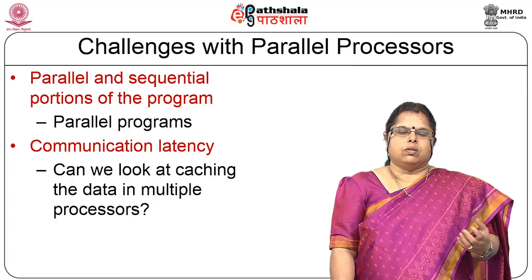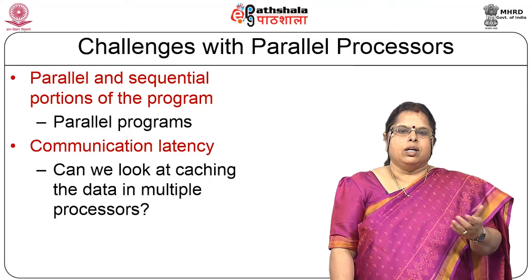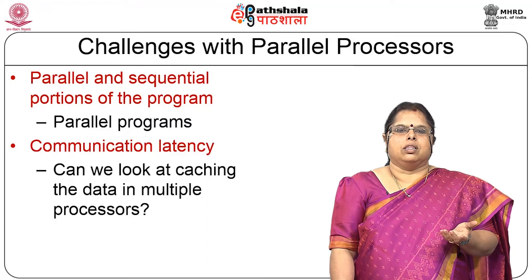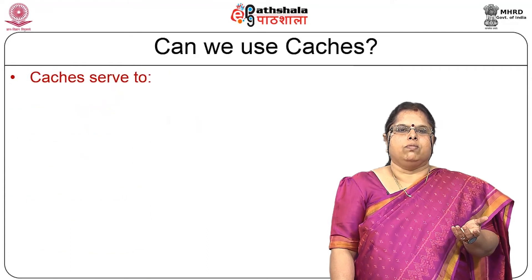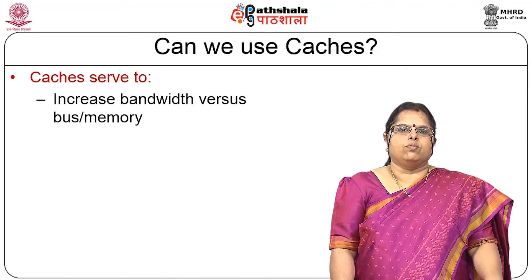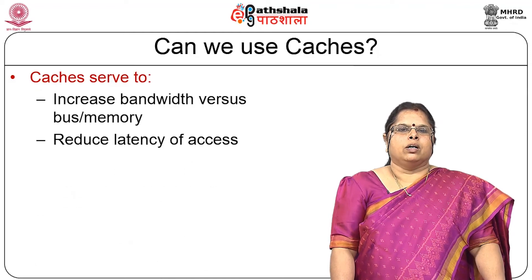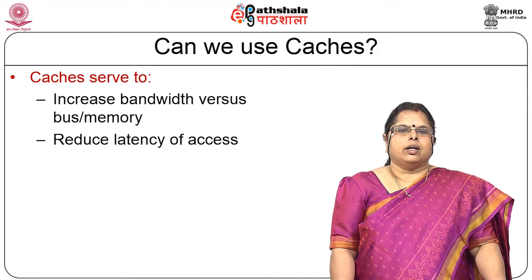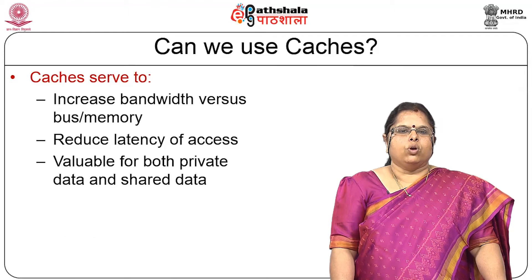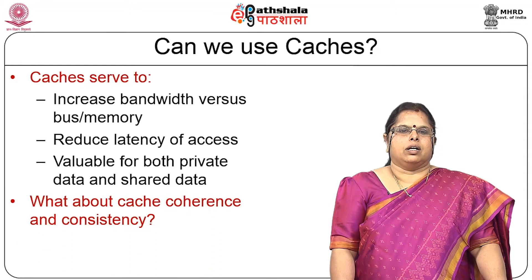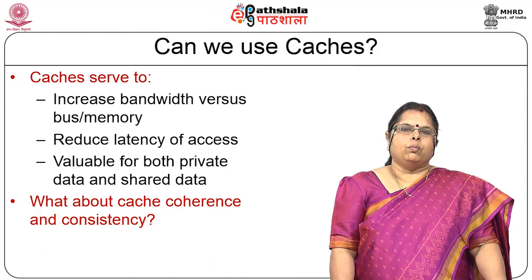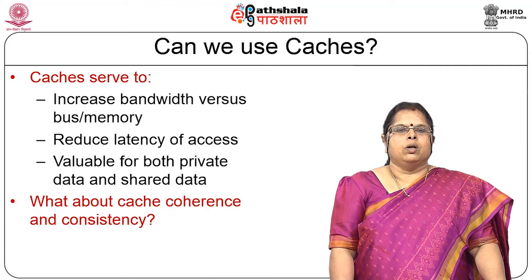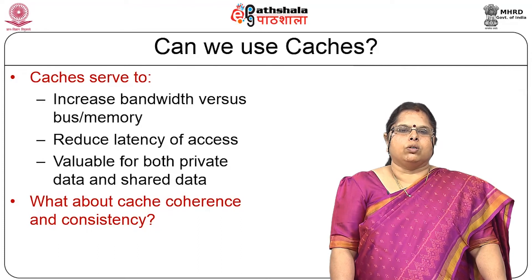As each processor wants data that it is going to commonly use, can that data be cached in the processor's respective caches? Caches serve to increase your bandwidth versus memory or bus speed, and reduce latency of access. They are valuable for both private data as well as shared data. But the moment you bring caches into a multiprocessor system, you also have the problem of cache coherence and the cache consistency problem.